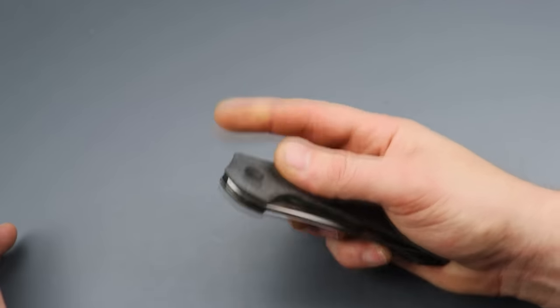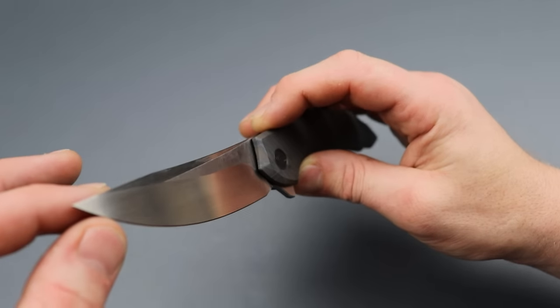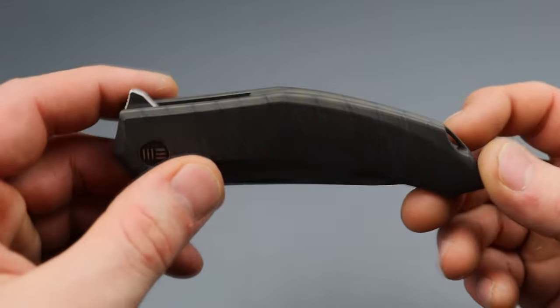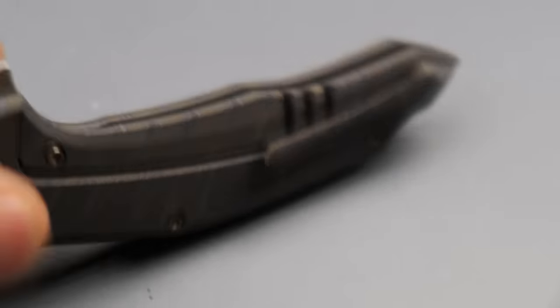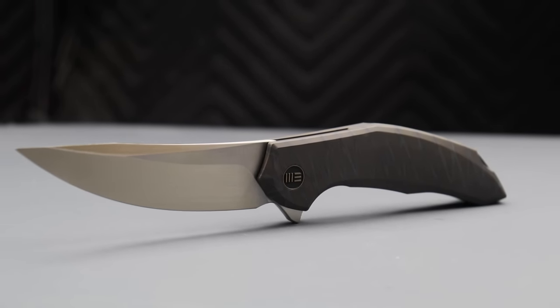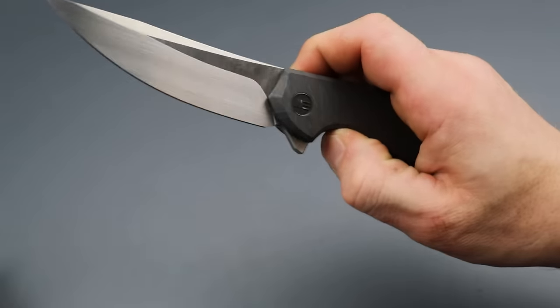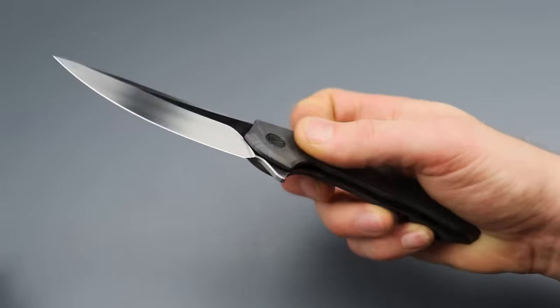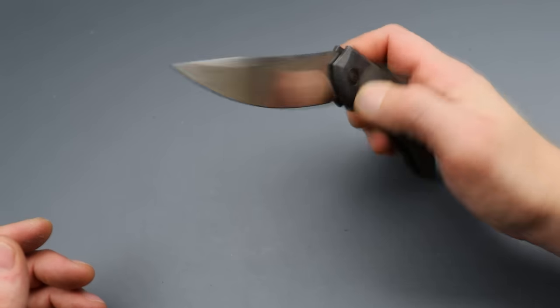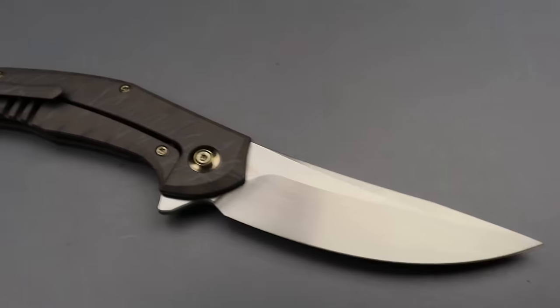The action is ridiculous. It's got a hand satin finish on it. 20CV steel. This one has the tiger stripe titanium that follows around the back spacer and on the pocket clip. Hidden lanyard pin back here. Titanium hardware all the way around. Phenomenal flipping action. This is a really cool one and I haven't seen much about it even though it is a badass knife.